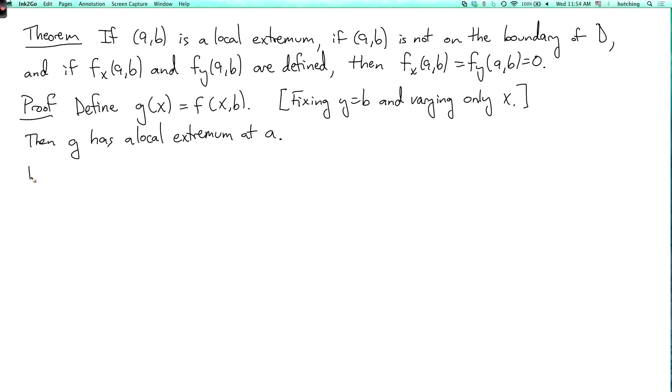So by the single variable story, which we reviewed before, we know that g'(a) has to equal zero. But g'(a) is exactly the same thing as fx evaluated at (a,b). So this is equivalent to our definition of partial derivative. The partial derivative is just the ordinary single variable derivative when you restrict the function to a line in which only one of the coordinates is varying.